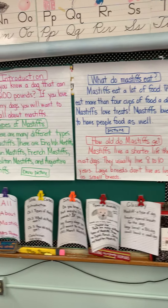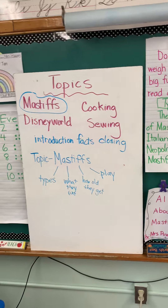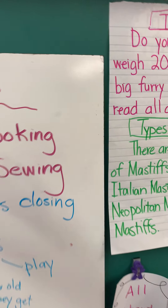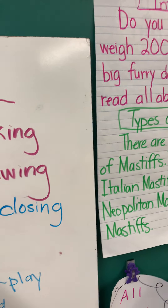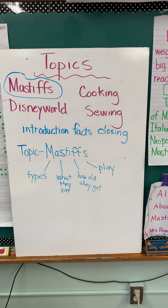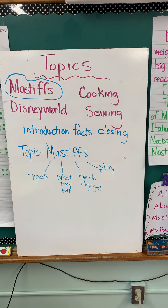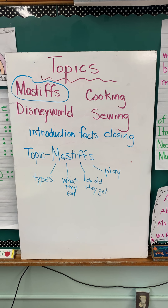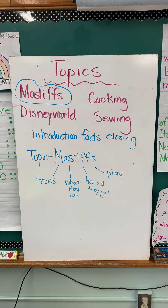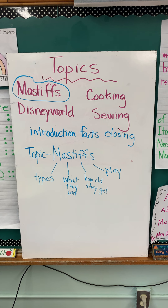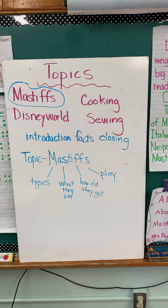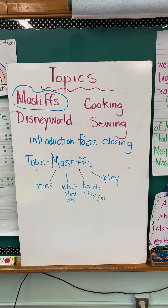Some examples of writing that other students have done: we have someone writing a cookbook — their topic was cooking, and under their subtopics they were writing about how to make cupcakes and how to make pizza. Some people chose to write about soccer, and under their subtopics they wrote about the history of soccer, players in soccer, how do you play soccer, and gave us information.